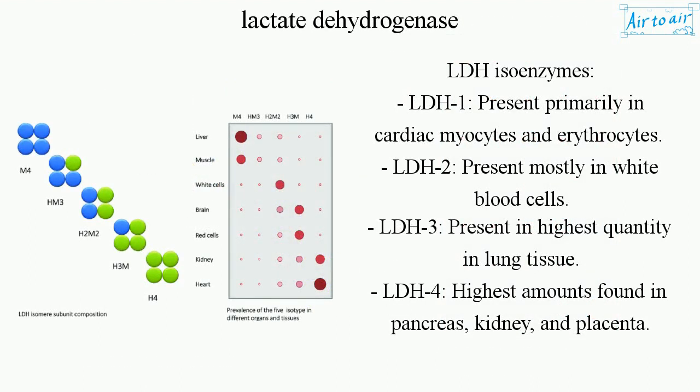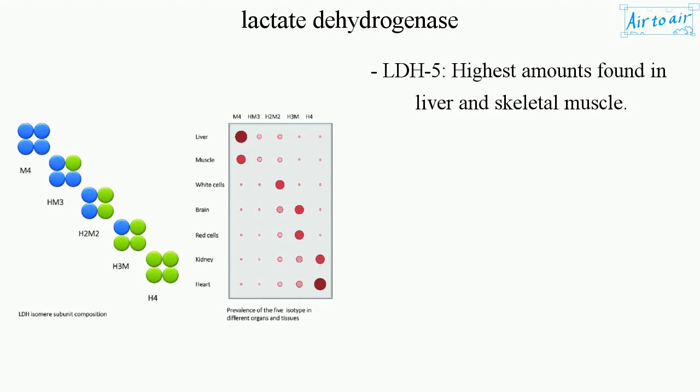LDH isoenzymes by tissue: LDH1 is present primarily in cardiac myocytes and erythrocytes. LDH2 is present mostly in white blood cells. LDH3 is present in highest quantity in lung tissue. LDH4 is found in highest amounts in the pancreas, kidney, and placenta. LDH5 is found in highest amounts in liver and skeletal muscle.